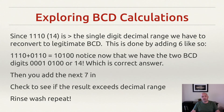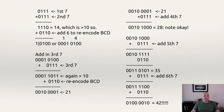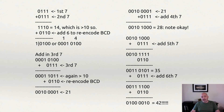The next step would be to add the next 7 in and repeat. Here we have the entire multiplication problem expressed one step at a time. On the top left we have 0111 plus 0111. When we add them up we get 14 in binary, but it's greater than 9 in that nibble, so we re-encode by adding 6 back in — 0110 — giving us 10100. Split into two nibbles, we are left with the value 14 in binary coded decimal.